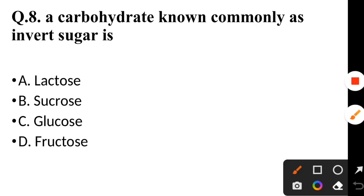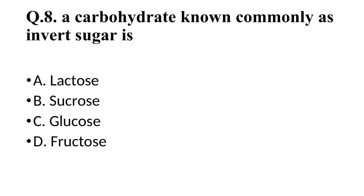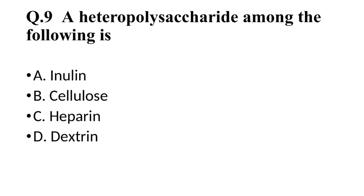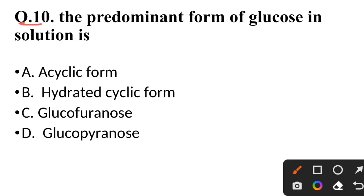Question 8: A carbohydrate commonly known as invert sugar is — correct answer is sucrose. Question 9: A hydro-polysaccharide among the following is — correct answer is heparin. Question 10: The predominant form of glucose in solution is — correct answer is glucopyranose.